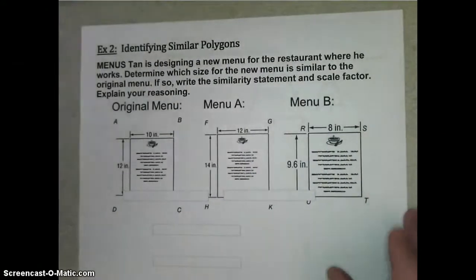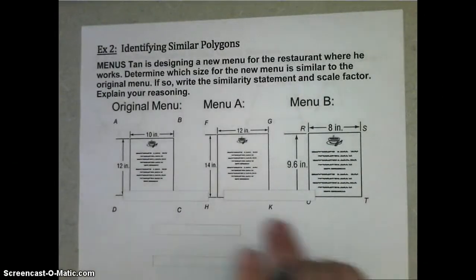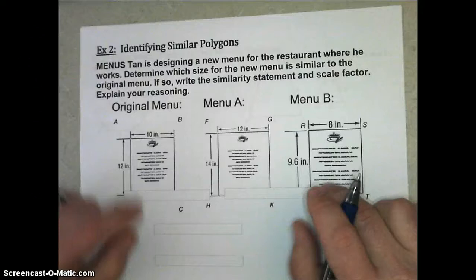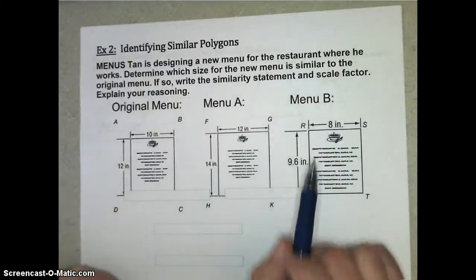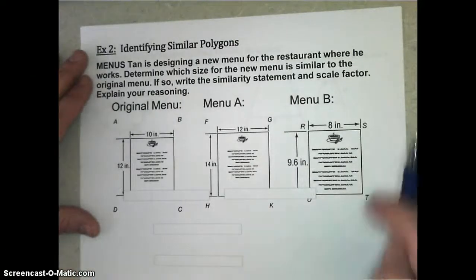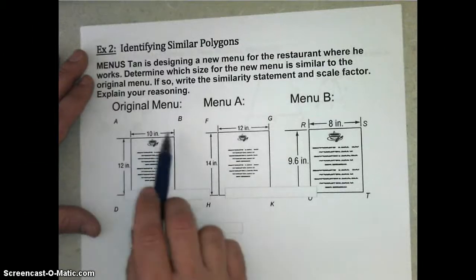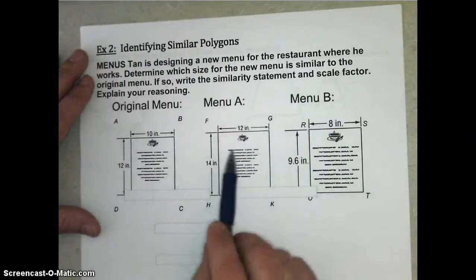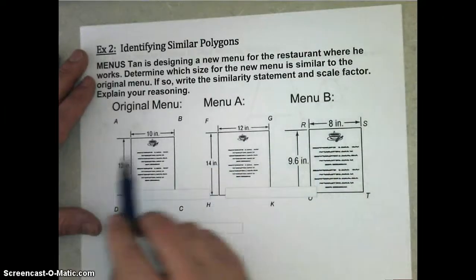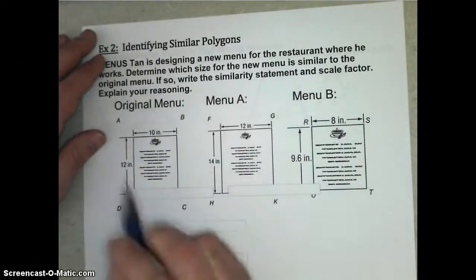So let's take a look at example two. We have an example of where Tan is designing a new menu for the restaurant where he works. Determine which size for the new menu, either A or B, is similar to the original menu. And whichever one is similar, we need to write that similarity statement and its scale factor.